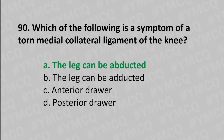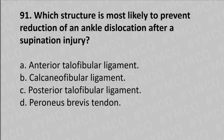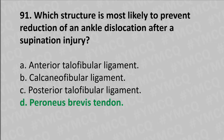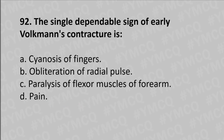Moving to our 91st question: which structure is most likely to prevent the reduction of ankle dislocation after a supination injury? Option A anterior talofibular ligament, option B calcaneofibular ligament, option C posterior talofibular ligament, option D peroneus brevis tendon. The answer is option D, peroneus brevis tendon.